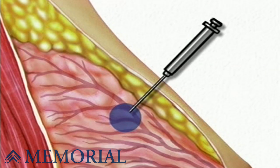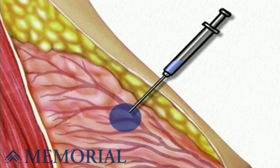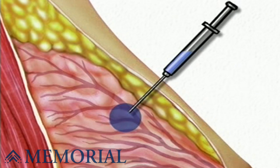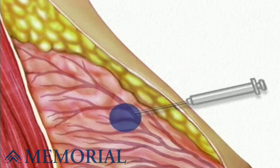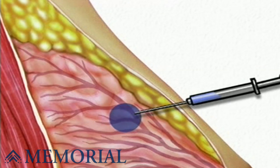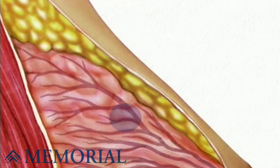Once the tip of the needle has penetrated the lump, the doctor will draw material from the lump up into the collection chamber. Depending on the size and location of the lump, your doctor may choose to reposition the needle and draw additional tissue for analysis.